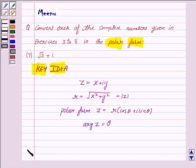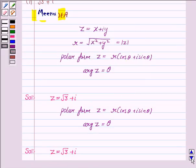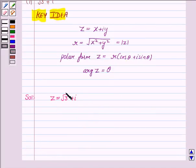Let's now move on to the solution. Let the complex number root 3 plus iota be denoted by z. So z is equal to root 3 plus iota. Comparing it with x plus iota y, we can see that x is equal to root 3 and y is equal to 1.